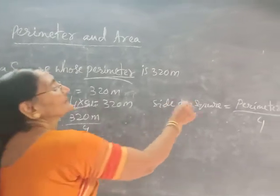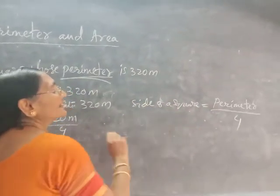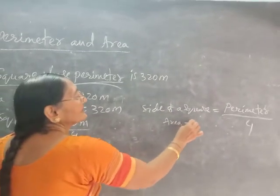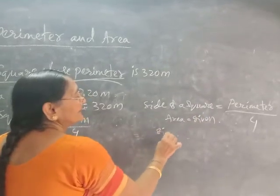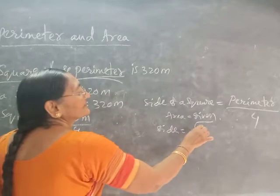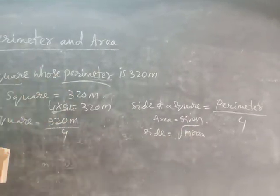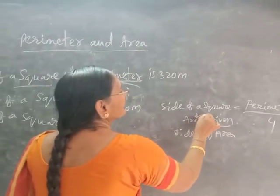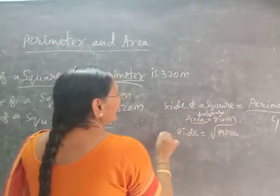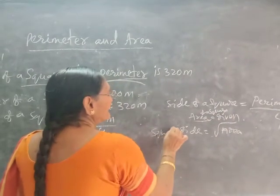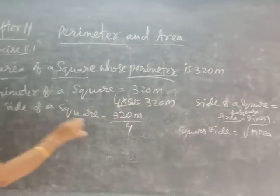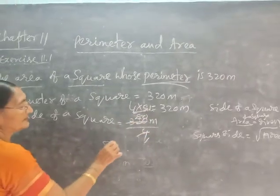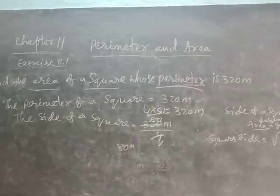If the perimeter is given and you want to find the side, use: side = perimeter ÷ 4. Dividing 320 meters by 4 gives side = 80 meters.